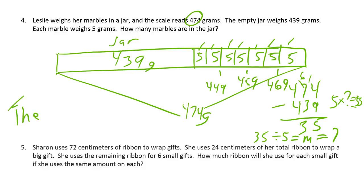And I just did it two different ways. So, that explains how my answer is reasonable. There are 7 marbles in the jar. And I could label this as marbles. These are marbles.